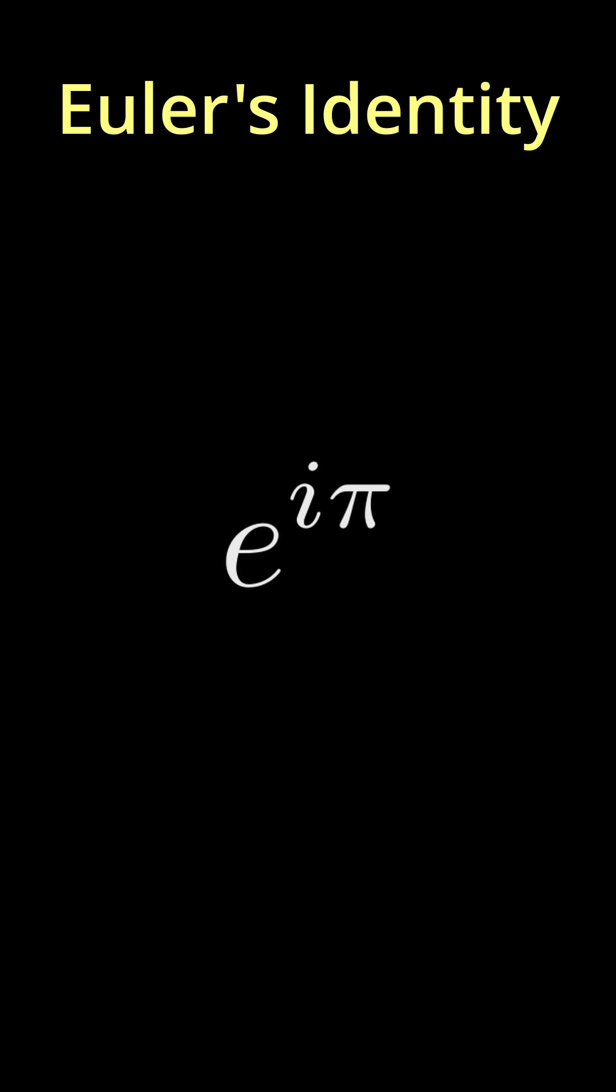Let's look at e to the i pi. This is e to the power of i pi over n raised to the nth power.